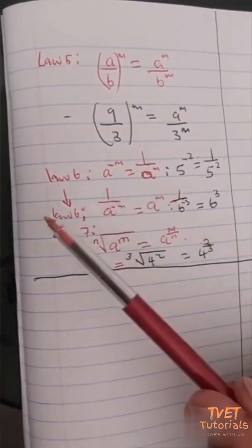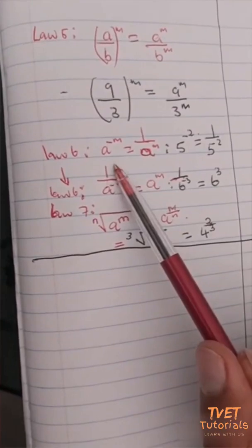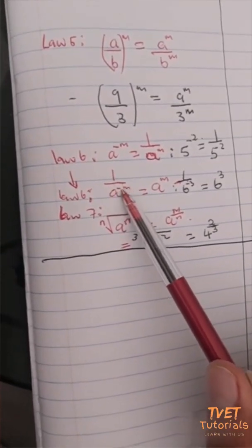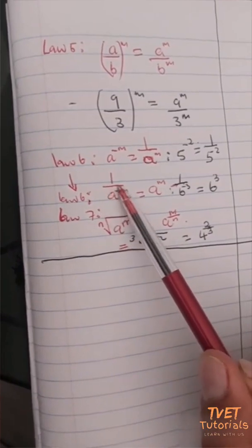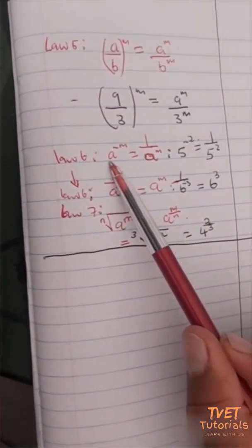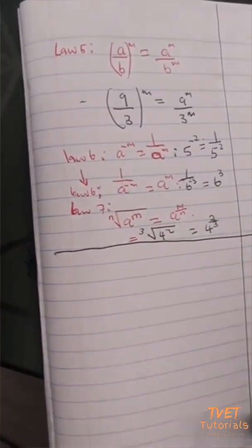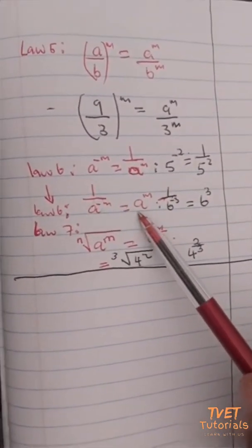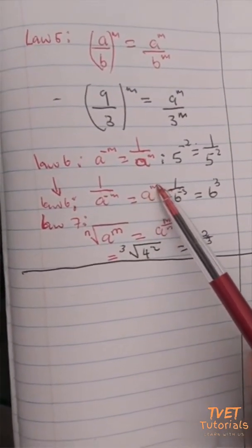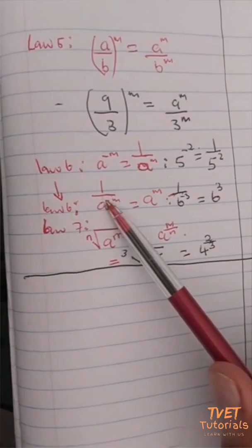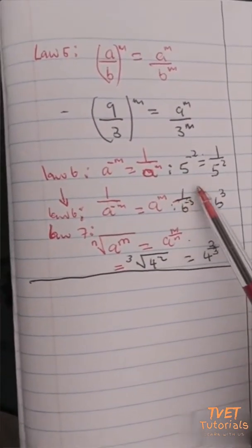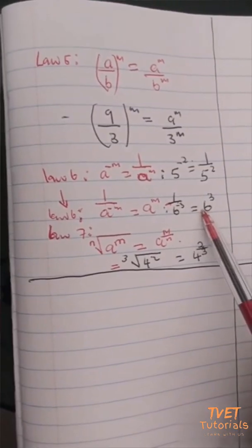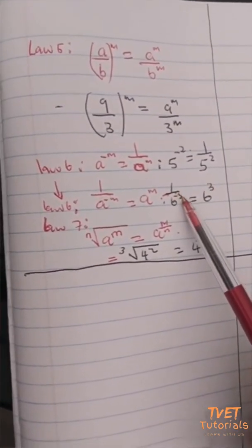Law six can also be written in reverse form: if I have one divided by a raised to a negative exponent, that is the inverse of an inverse, which gives you back the original number. So this can be represented as a raised to the positive power m. Looking at the example: one divided by six to the power negative three can be represented as six to the positive power three — I got rid of the negative exponent by applying the inverse of the inverse.